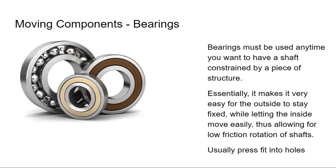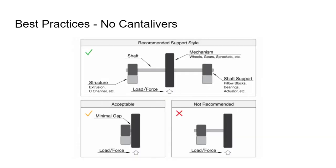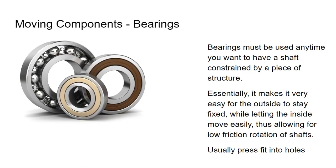To reiterate: the purpose of bearings is to provide a connection point between something that doesn't move and something that does move, giving a really low friction way to connect those two things. You want to use them everywhere you have a moving shaft. Those two points of contact — bearings on both sides of a shaft — are your two points of support. A bearing on one side is one point of contact, which is less than ideal as we mentioned.